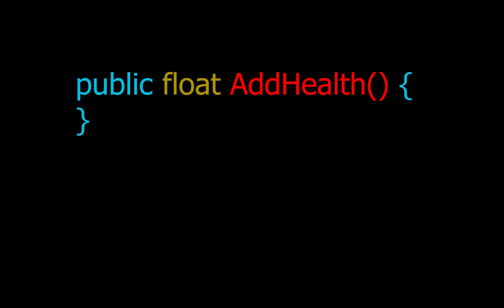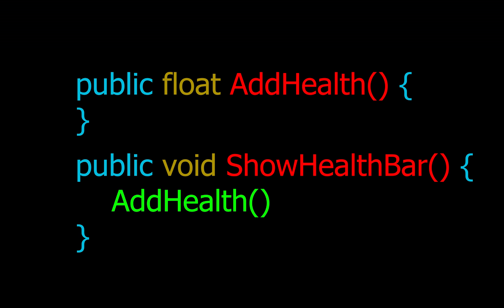Now consider another non-void function like AddHealth, which is called by the ShowHealthBar method. If we hook AddHealth with a void hook, the method will be hooked and we can get more health, but the health bar will not get updated because ShowHealthBar did not call AddHealth.